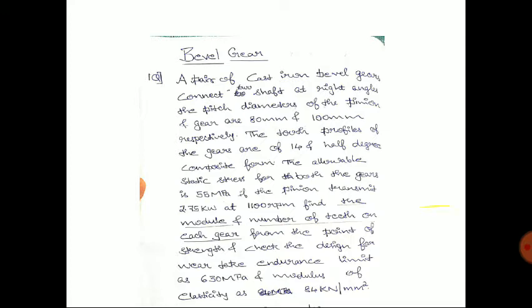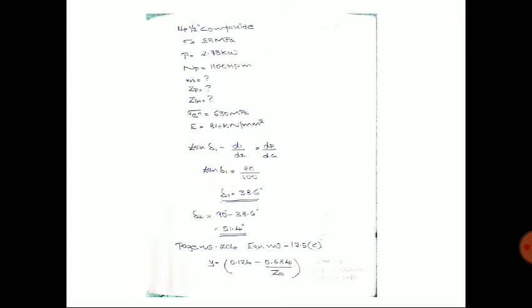Given data: tooth profile is 14.5 degree composite; static stress = 55 MPa; power = 2.75 kW; rpm of pinion = 1100. We need to find module, Tp (number of teeth on pinion), Tg (number of teeth on gear). Endurance strength = 630 MPa; Young's modulus E = 84 kN/mm².